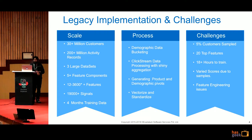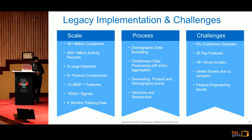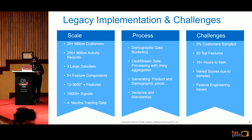Talking about the legacy implementation and challenges: this particular market propensity model uses logistic regression on a 30 million customer base with 200 plus million activities, covering clickstream data and in-store data. Three different datasets were used: the clickstream data, demographic information for the customer, and product data. These three datasets were used for the logistic regression model.